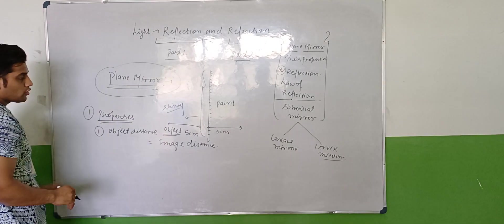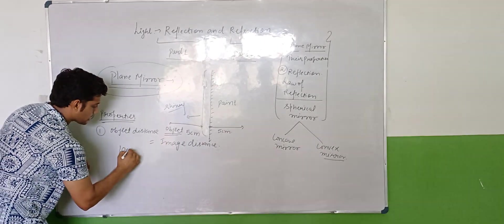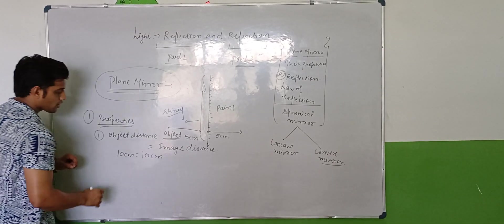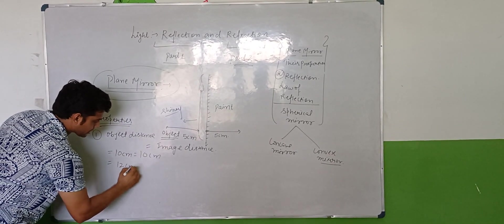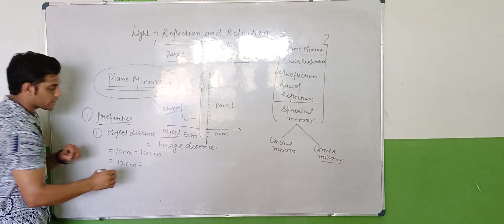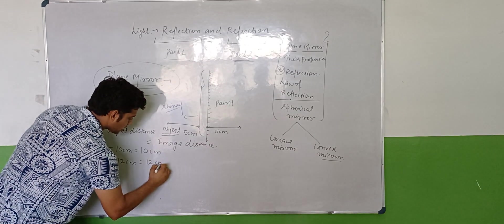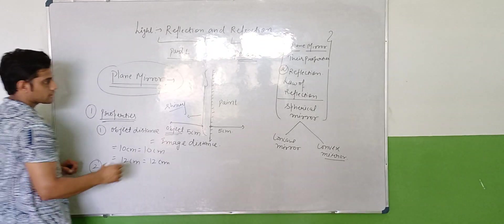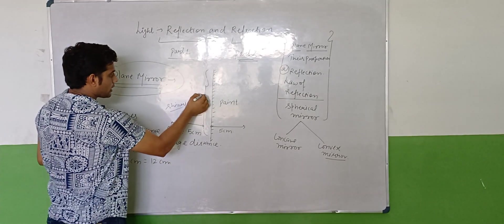We can say that if object is 10 cm from the mirror, the image distance is also 10 cm. If object distance is 12 cm, then the image distance is also 12 cm. Second property is height.